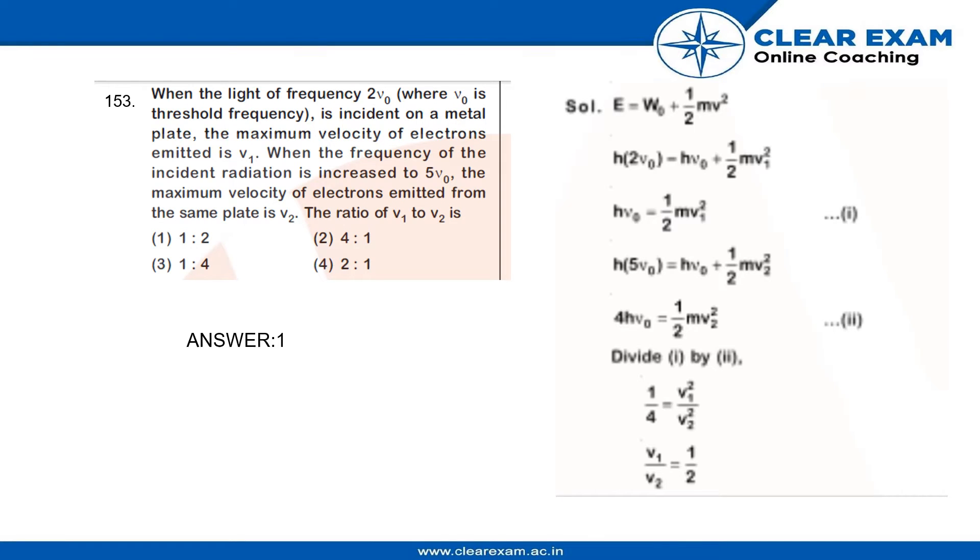Question number 18. When the light of frequency 2μ0, where μ0 is threshold frequency, is incident on a metal plate, the maximum velocity of electrons emitted is V1. When the frequency of the incident radiation is increased to 5μ0, the maximum velocity of electrons emitted from the same plate is V2. The ratio of V1 to V2 is, so we have to find the ratio of V1 to V2.